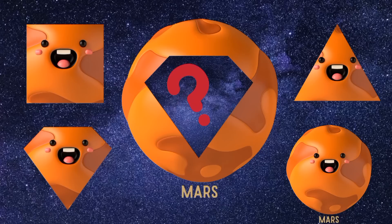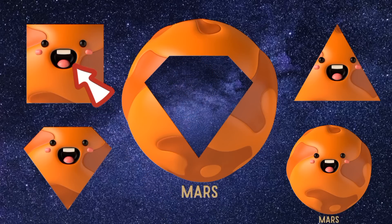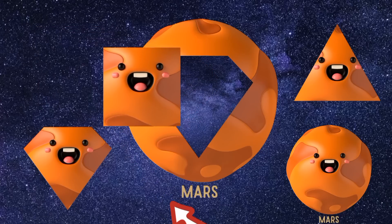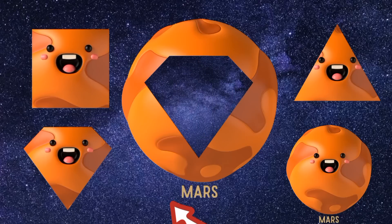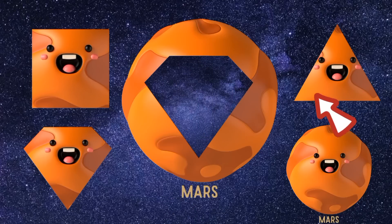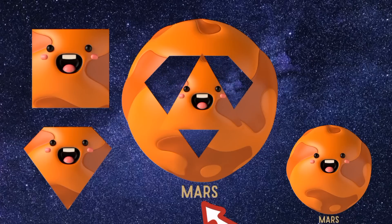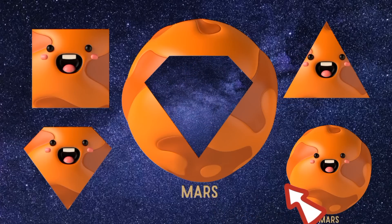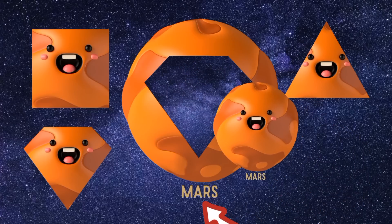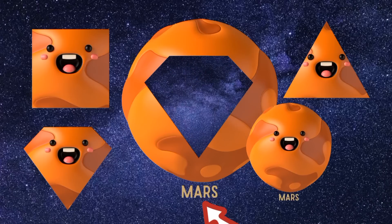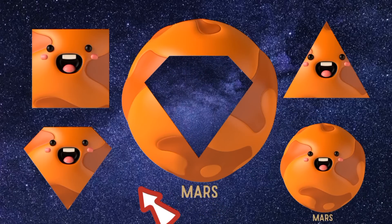What is here? Square. Square. Triangle. Triangle. Circle. Circle. Diamond. Wind. Wind.